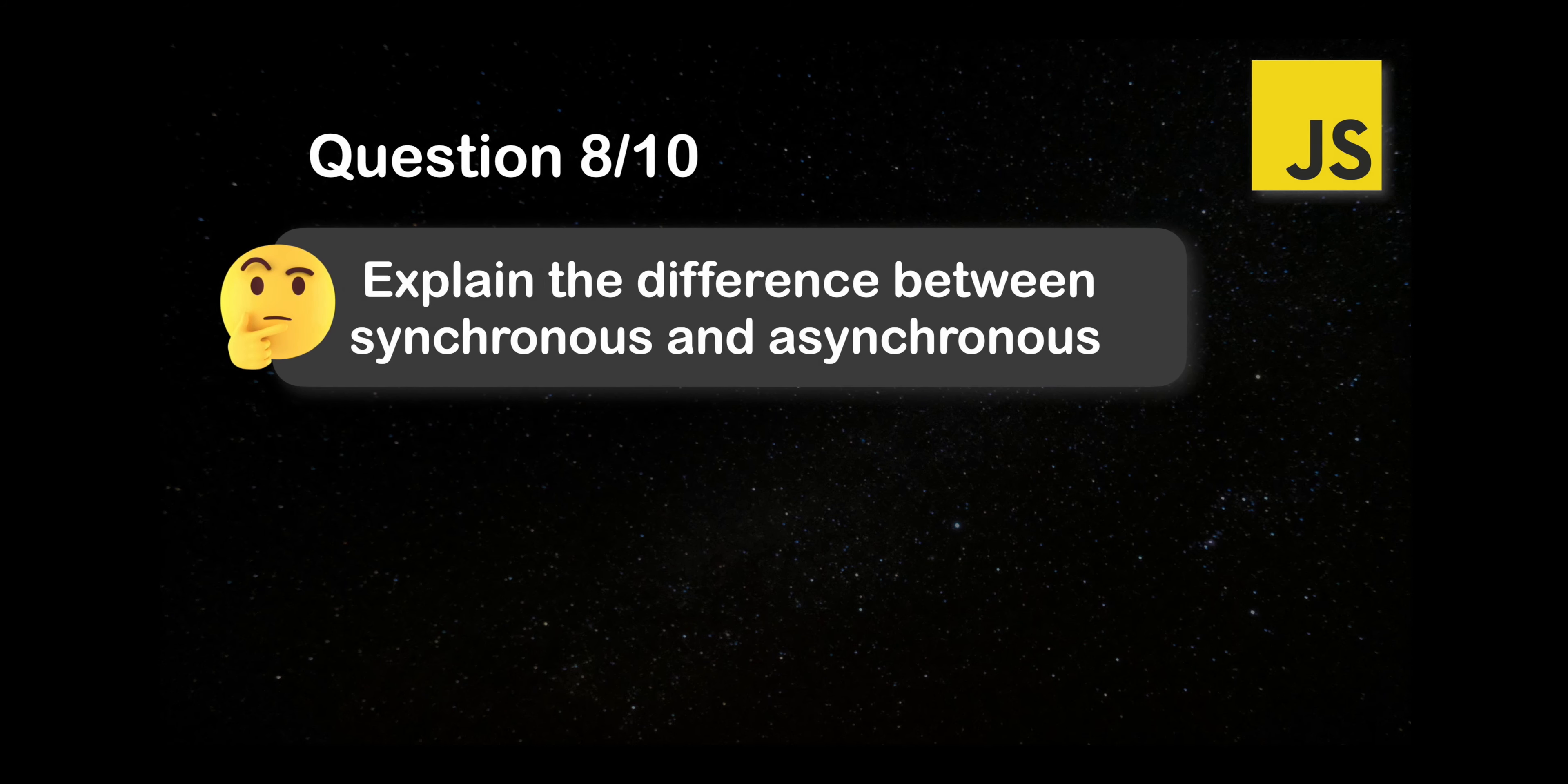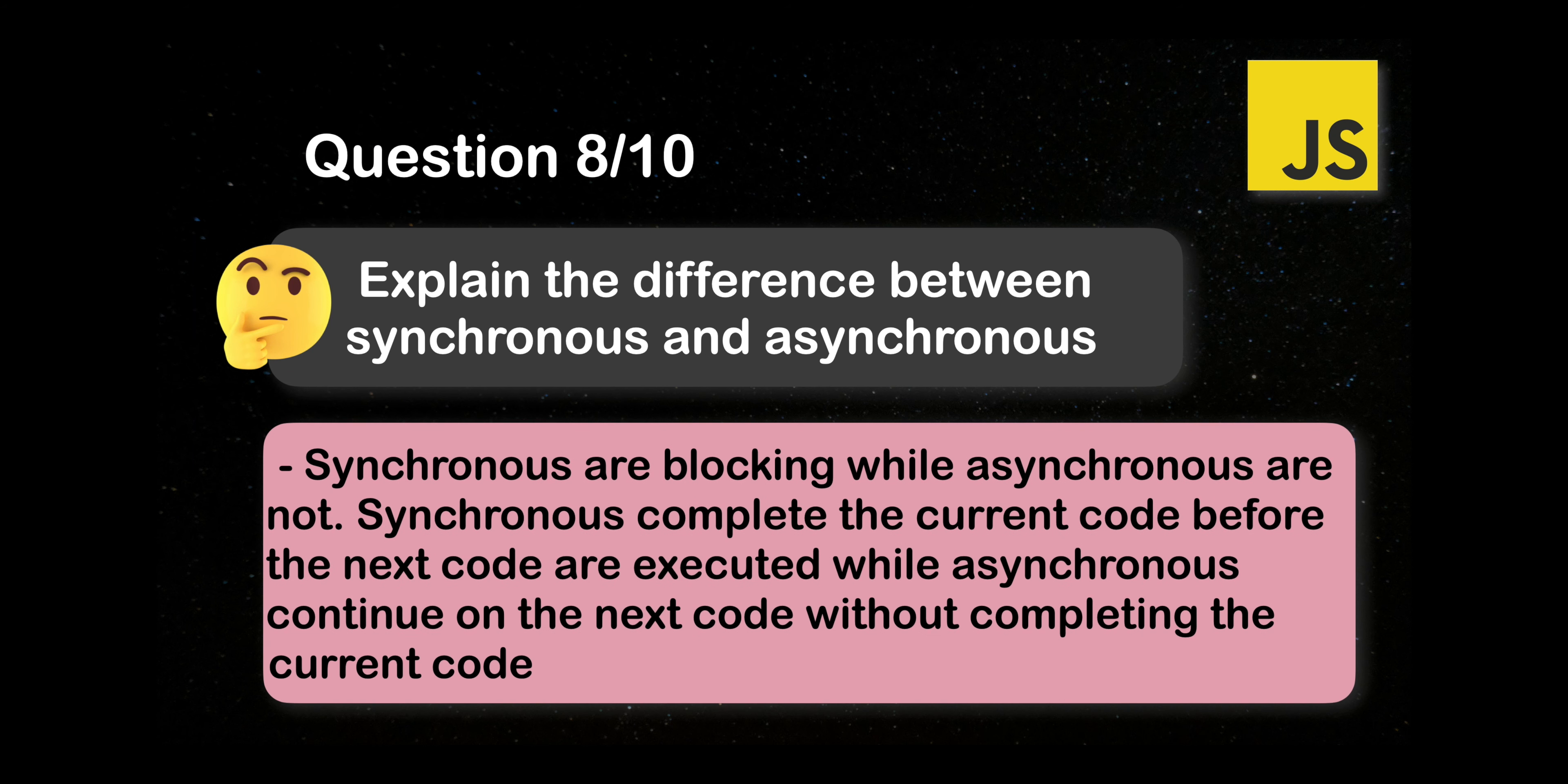Next question. Explain the difference between synchronous and asynchronous. Synchronous is blocking while asynchronous is not. Synchronous completes the current code before the next code is executed. Asynchronous continues on the next code without completing the current code.